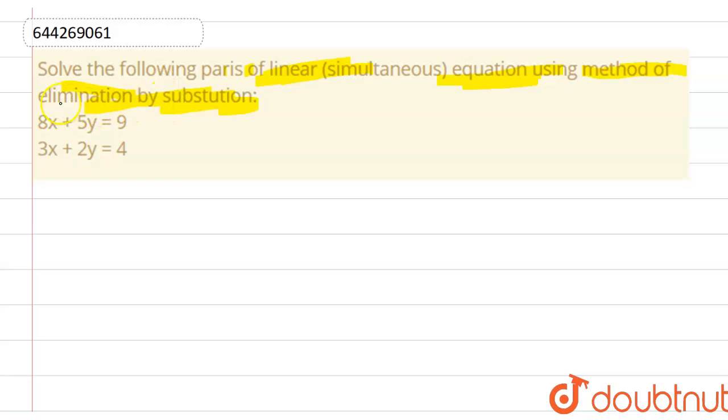In this method, the elimination by substitution, what we do is take the value of one variable from one equation and put it into the another equation.